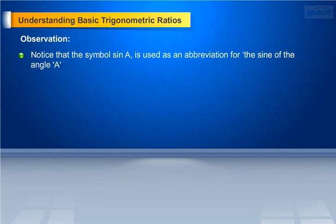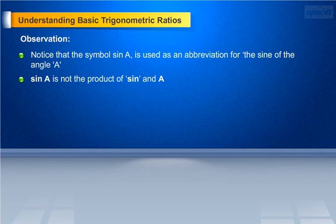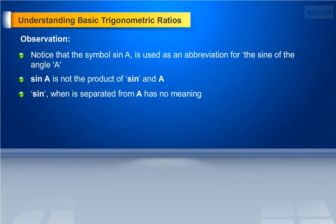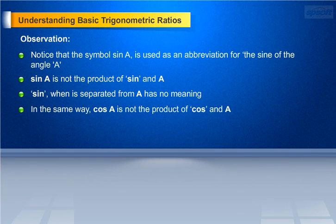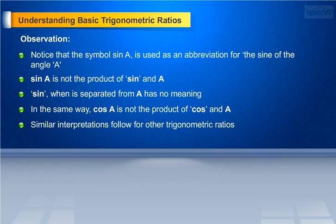Notice that the symbol sin A is used as an abbreviation for the sine of angle A. Sin A is not the product of sin and A. Sin, when separated from A, has no meaning. In the same way, cos A is not the product of cos and A. Similar interpretations follow for other trigonometric ratios also.